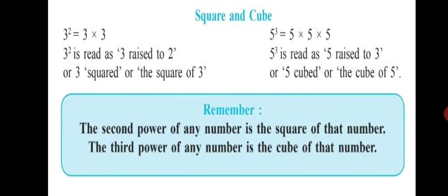Remember, the second power of any number is the square of that number. So the second power of 3 is the square of 3. And the third power of any number is the cube of that number — 5 raised to 3 is called the cube of 5. Whenever you see the index as 2, you call it the square of the given number. And when you see the index as 3, you call it the cube of that given number.